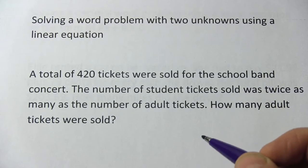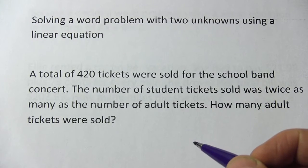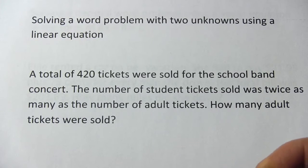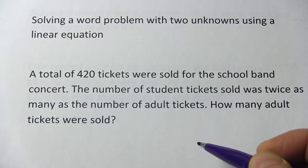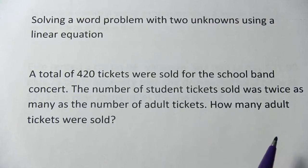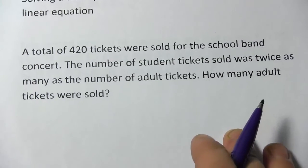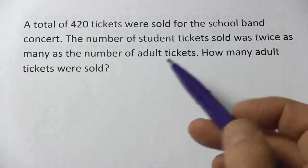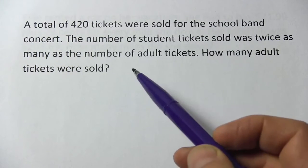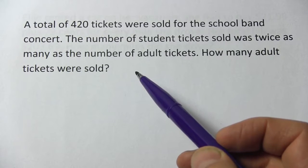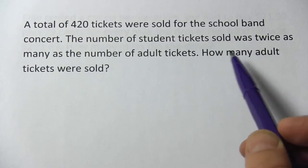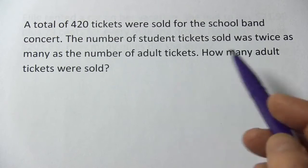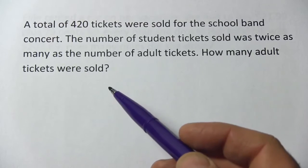Here we have a word problem with two unknown quantities, and we need to come up with an equation for it and then try to solve it. It says a total of 420 tickets were sold for the school band concert. The number of student tickets sold was twice as many as the number of adult tickets. How many adult tickets were sold?